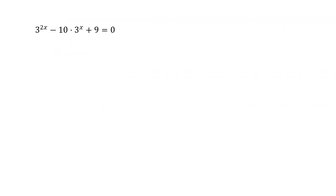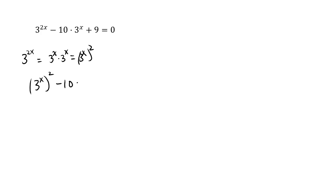For the next problem, you see something complicated, but 3 to the 2x is like 3 to the x times 3 to the x. If you have the same base, the two exponents add up, so x plus x gives you 2x. This means 3 to the 2x is 3 to the x squared. If you rewrite it that way, this is again a problem for substitution, because you have 3 to the x repeated. So you rewrite that as u, giving you u squared minus 10u plus 9 equals 0, where u is 3 to the x.